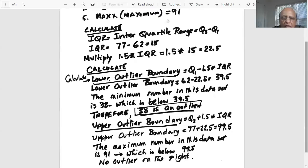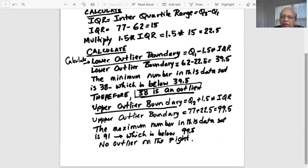So the lower outlier boundary is 39.5. The minimum number in this data set is 38, which is below the lower outlier boundary. Therefore, 38 is an outlier. How do we calculate the upper outlier boundary? We do Q3 plus 1.5 times IQR, or 77 plus 22.5, which is 99.5. We notice the maximum number in this data set is 91, which is below 99.5. Therefore, there is no outlier on the right. So there is only outlier on the left, which is 38.